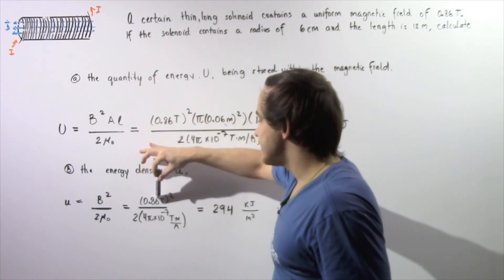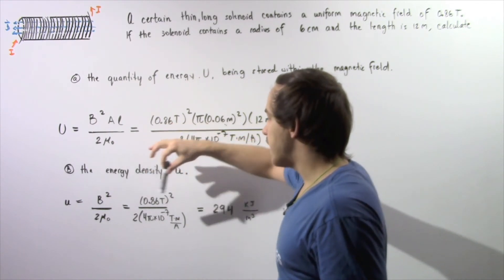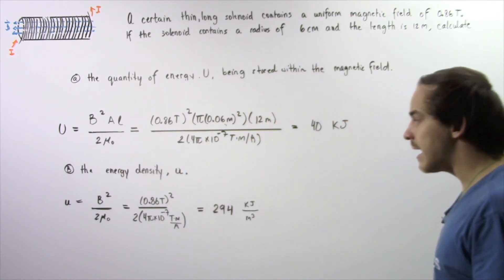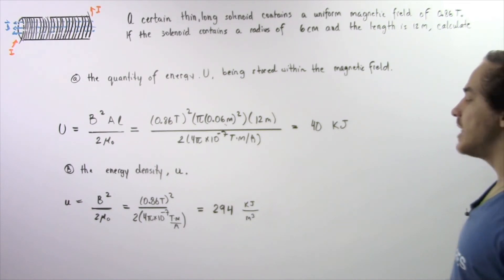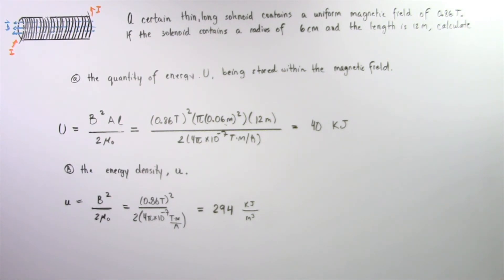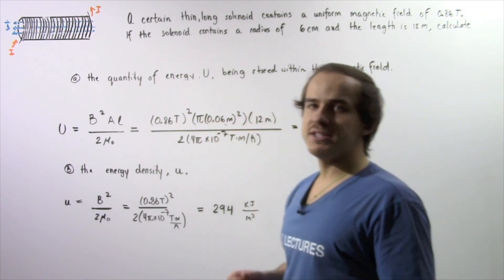So 0.86 tesla squared divided by 2 times 4 pi times 10 to the negative 7 teslas times meters divided by amps. And that gives us about 294 kilojoules per meter cubed as our energy density of the following solenoid.